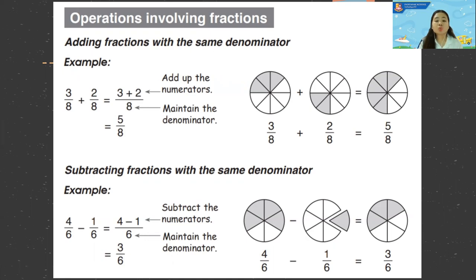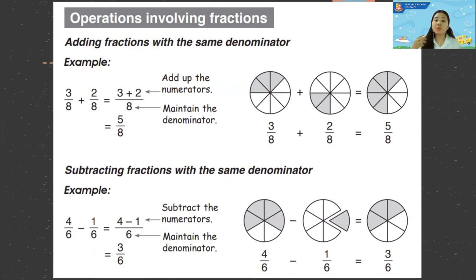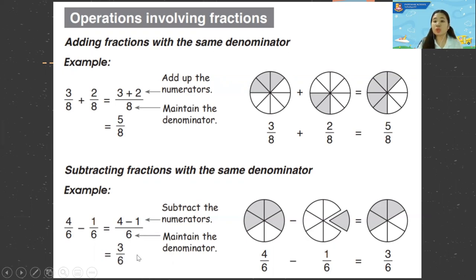Subtracting fractions with the same denominator is also very easy. You just subtract the numerator, then copy or maintain the denominator. For example, four sixths minus one sixth equals four minus one, which is three, then maintain the six — so the answer is three sixths.